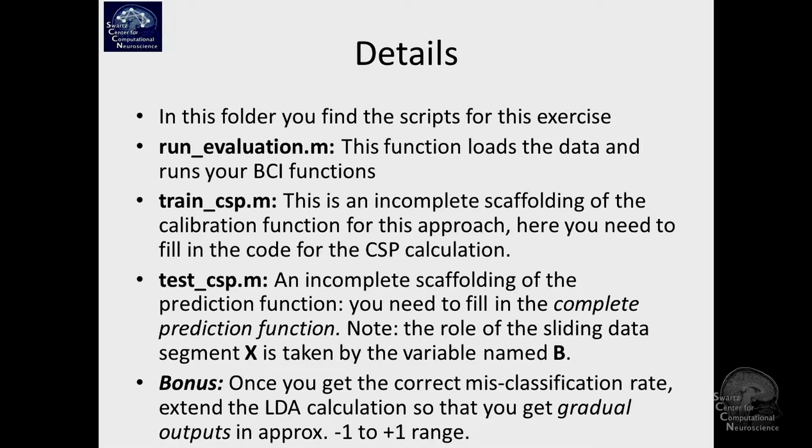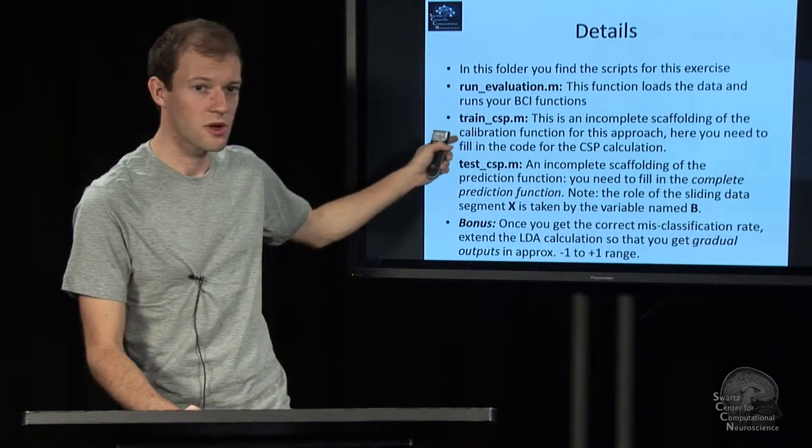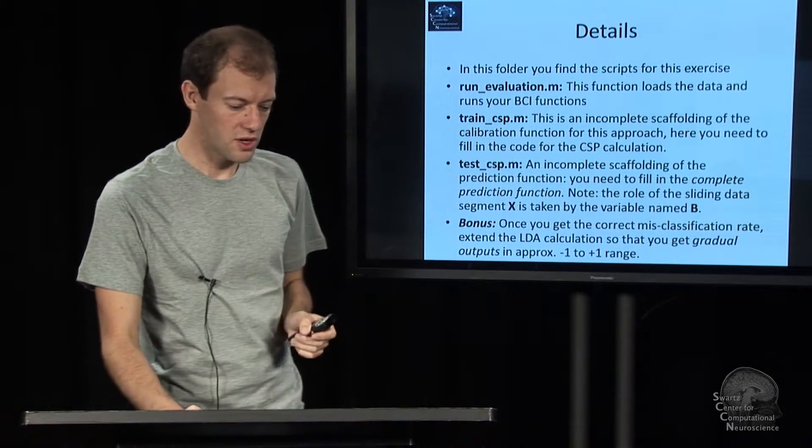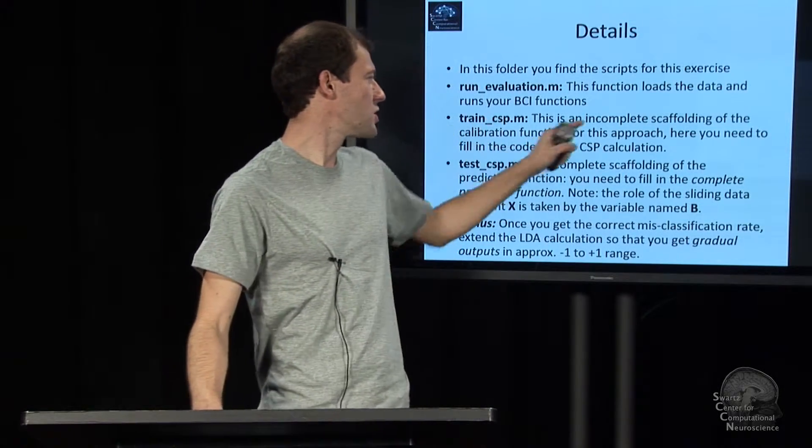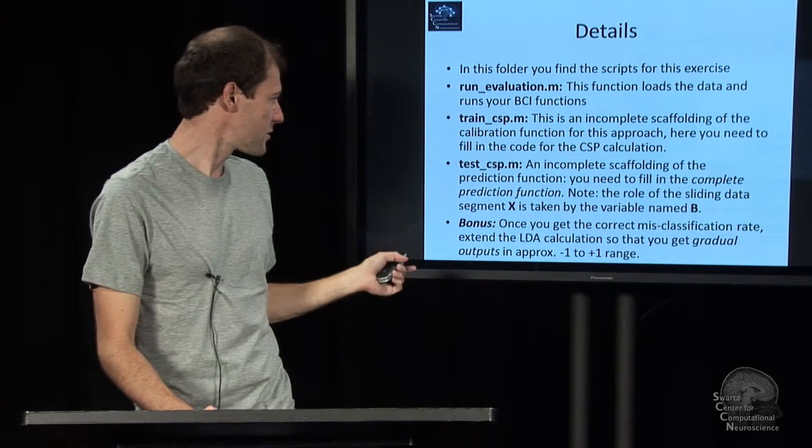So the function calls two other functions that are already provided, train_csp and test_csp, but they are each an incomplete shell where you actually put the right code in, as in the first exercise.